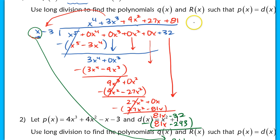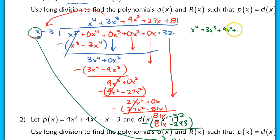The result is written as x to the 4th plus 3x cubed plus 9x squared and so on,